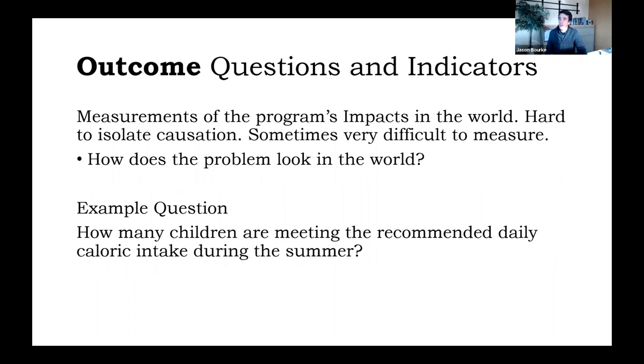And then finally, outcome indicators. These are measurements of the program's impacts in the world. These can be really hard, because if you remember in one of the earlier slides, the world is full of context, and there are many forces influencing everything that we do. So it can be really hard to isolate the outcomes or the actual impacts our program is making on the world, because there are so many possible contributing factors.